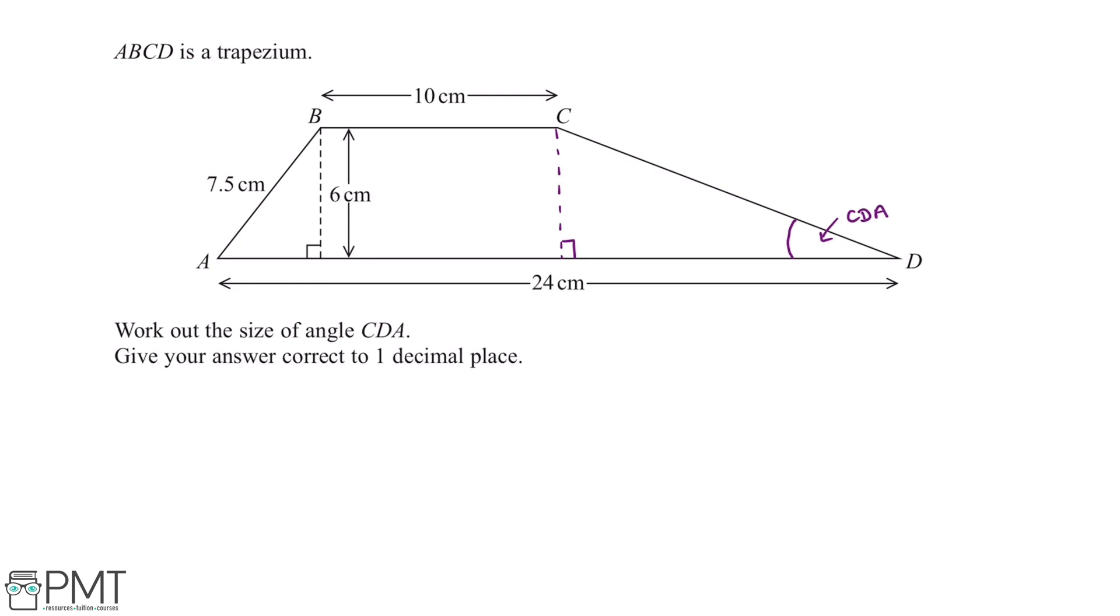So we can start working on this right angled triangle here. First we can work out the length of the base. To do this we can use Pythagoras. Pythagoras' theorem is that A squared plus B squared equals C squared.